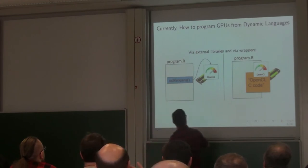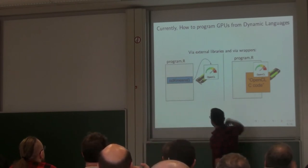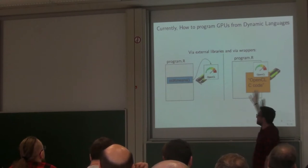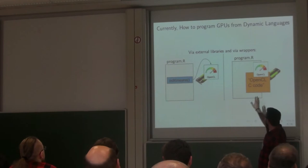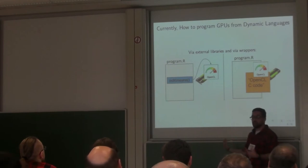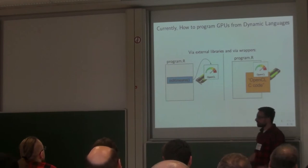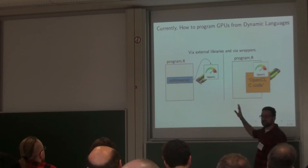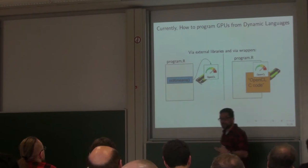Another way is via wrappers. That means you have your program, and in the middle you provide an OpenCL program. So the programmer, the user, has to know the R programming model, but also the OpenCL program plus the OpenCL architecture, which is a hurdle for most end users.